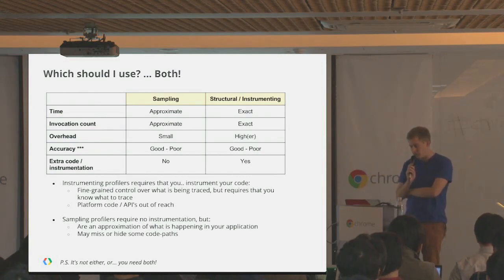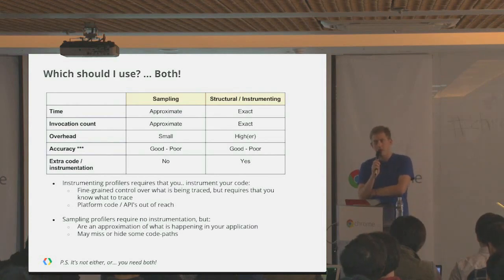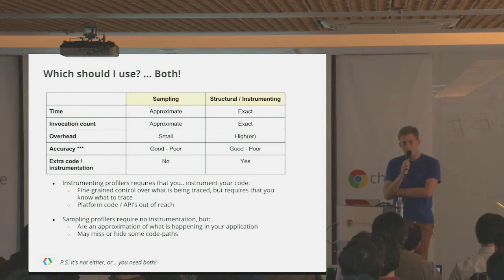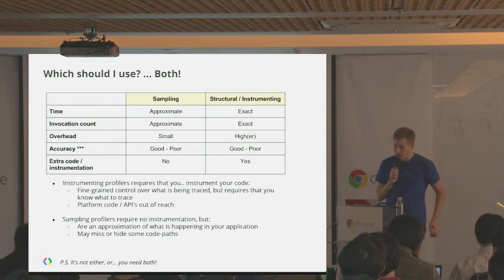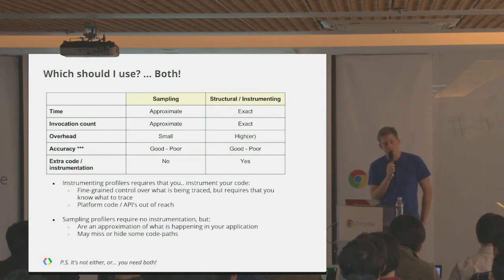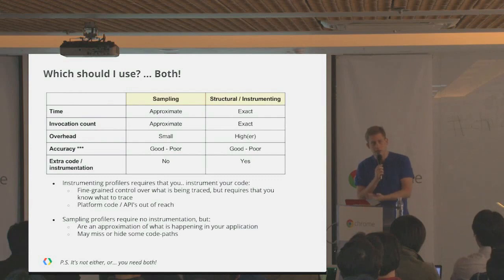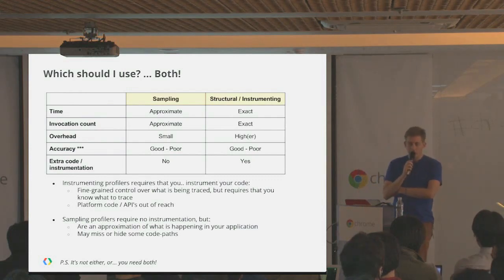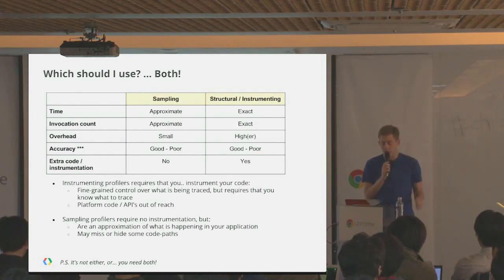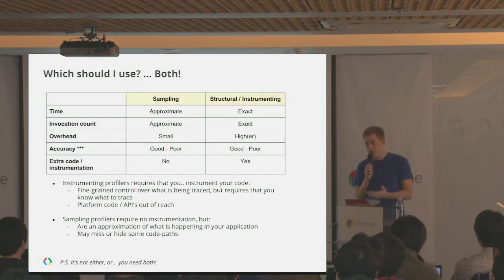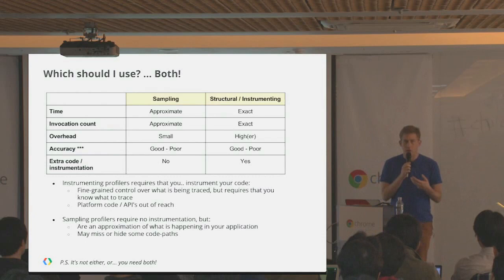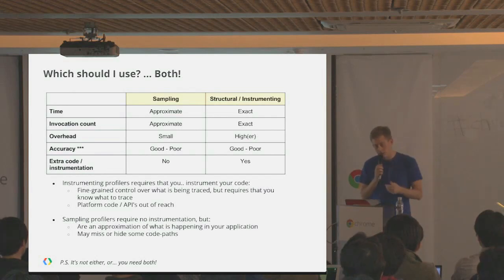In summary: sampling gives you approximate time, while structural gives exact time. Structural gives exact call counts; sampling gives a rough approximation. The great thing about sampling is that the overhead is tiny — almost free. Structural profiling overhead can be large, and if you insert structural markers throughout your entire codebase you can drastically slow down your program. That's why I recommend using it like breakpoints — move them around, insert and remove them as you search for that needle in the haystack.